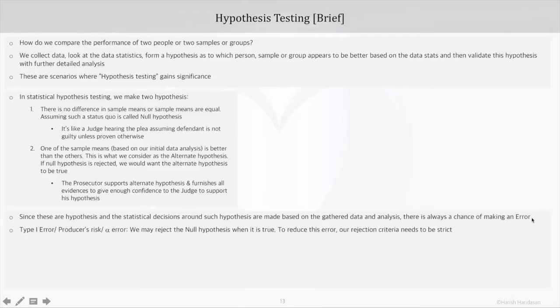First is Type 1 error. This happens when we reject the null hypothesis when it is true, like we hypothesize that sample means are equal and in reality they are equal, but we ended up rejecting the null hypothesis and believing that they are different. In a business scenario, if you reject a product or service that is of high quality, then the maximum loss would be for the producer, so this error is also called producer's risk.